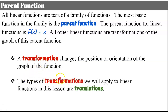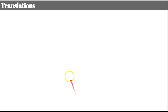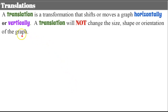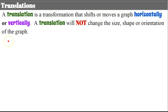The type of transformations we will apply to linear functions in this lesson is translations; future videos will cover reflections, stretches, and shrinks. A translation is a transformation that shifts or moves a graph horizontally or vertically. A translation will not change the size, shape, or orientation of the graph — it physically shifts it left, right, up, or down.